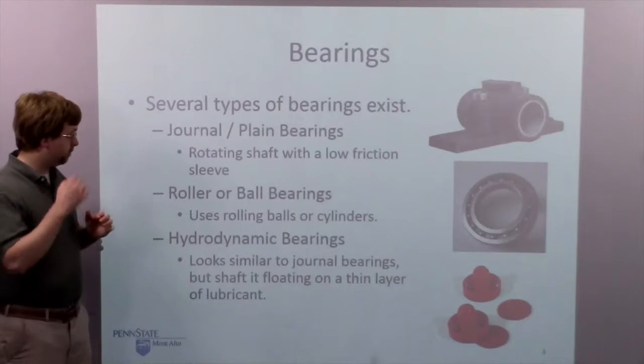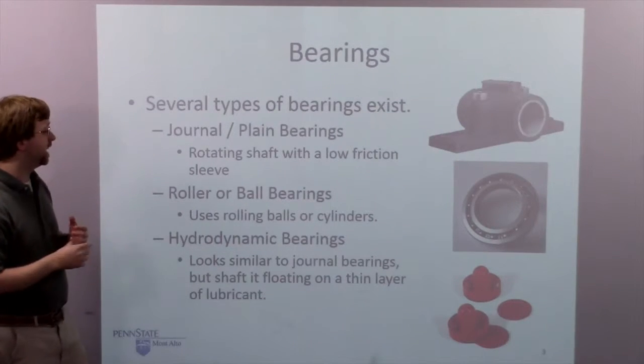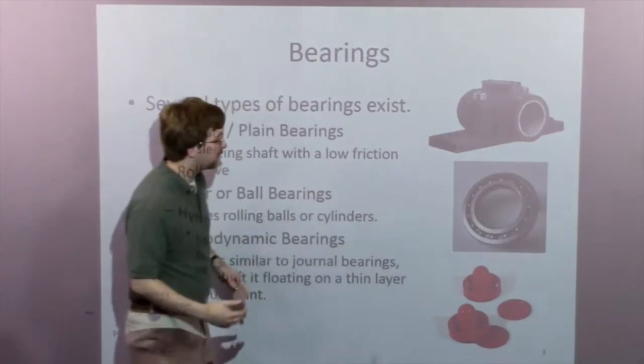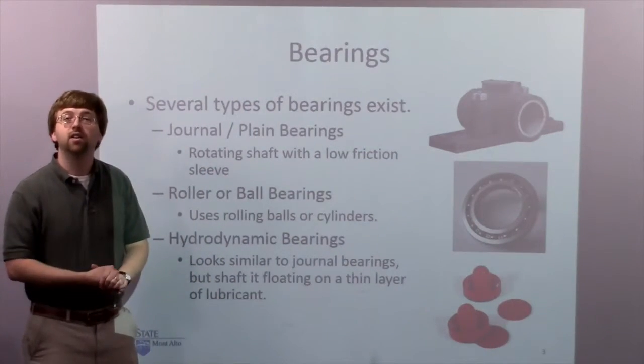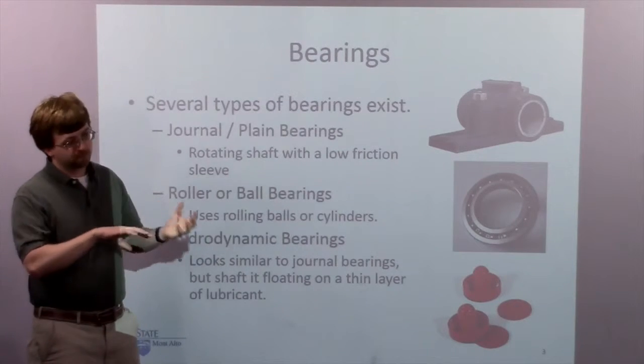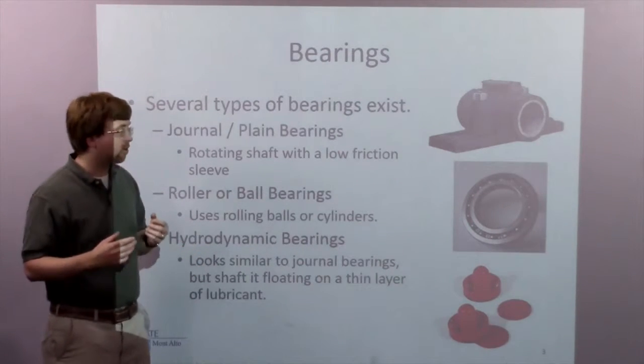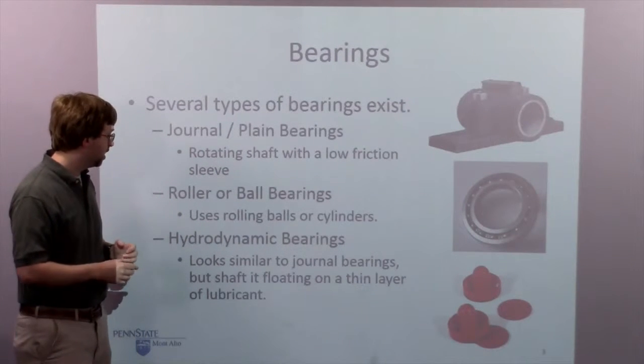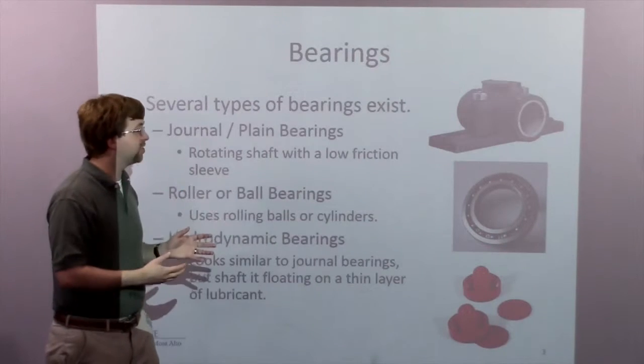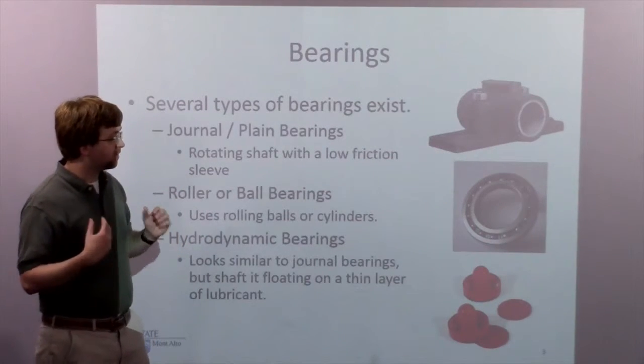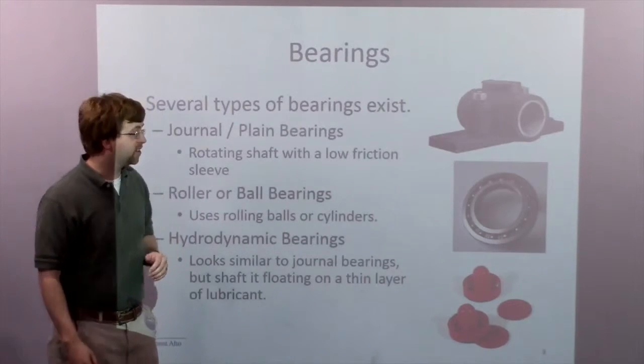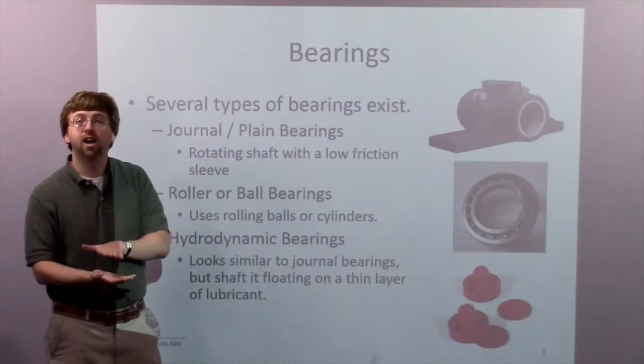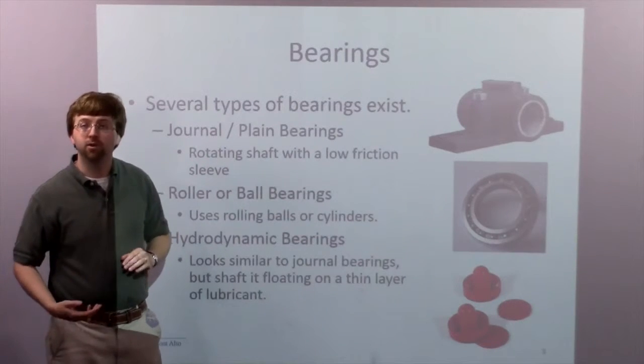The last type of bearing is a hydrodynamic bearing. They look very similar to journal bearings, but the way we reduce friction is we have some sort of fluid that is either introduced between the two surfaces or forced between those two surfaces. It's very similar to that journal bearing except we have a fluid, and that fluid boundary is usually very low friction - like an air hockey table where air between the puck and table reduces friction.